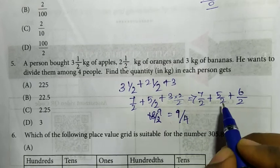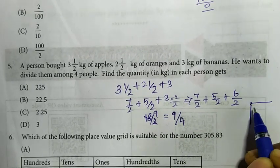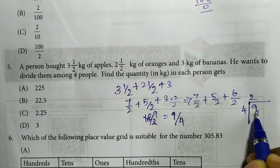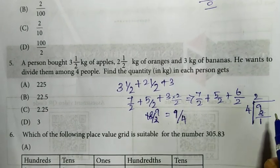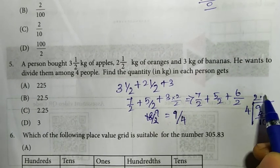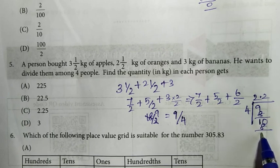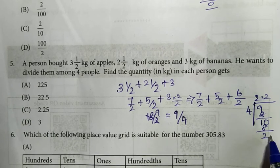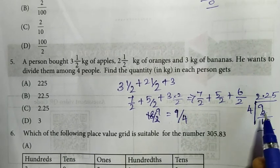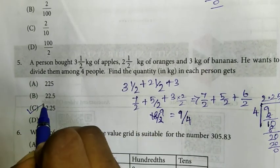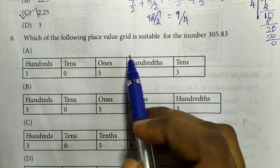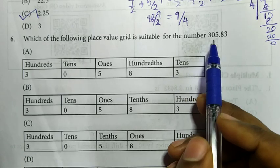Now divide by 4 people. Dividing: 4 goes into 8 twice. Putting the decimal point and continuing, 4 goes into 8 twice, remainder 0. So the answer is 2.25. Option C.